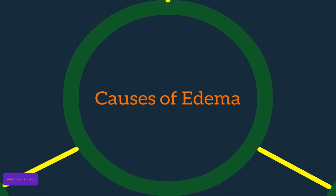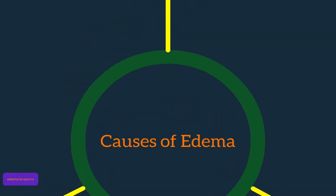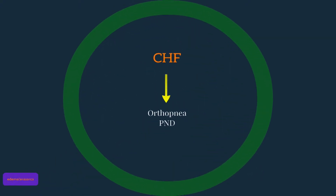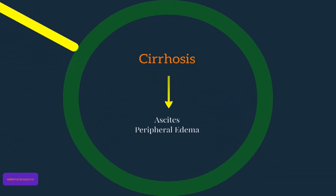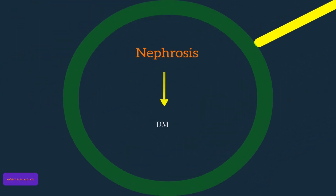The causes of edema are limited, and each can be defined separately. The first is congestive heart failure, which presents as orthopnea and PND. The second is cirrhosis, which may present as ascites and/or peripheral edema. The third is nephrosis, which presents commonly with diabetes but can be associated with other causes as well.